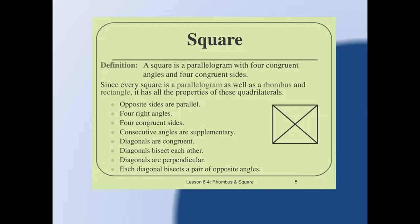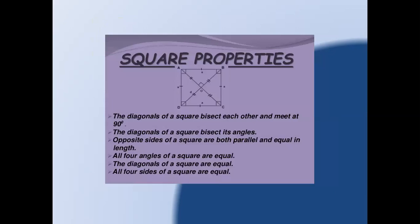The diagonals of a square are congruent to each other, bisect each other, and are perpendicular. Each diagonal bisects a pair of opposite angles. The diagonals of a square bisect each other and meet at 90 degrees. Opposite sides of a square are both parallel and equal in length. All four angles of a square are equal, and all four sides of a square are equal.